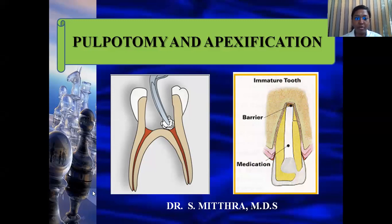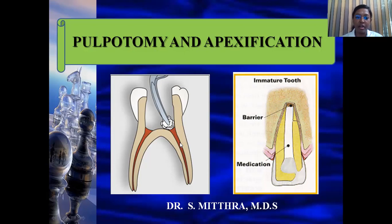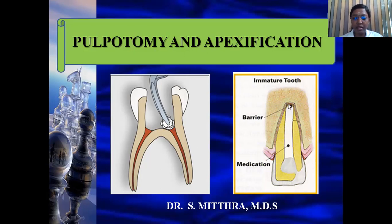Pulpotomy is a procedure in which only the inflamed, infected coronal pulp is completely excised, while we preserve the healthy pulp inside the radicular dentin in order to maintain the vitality of the affected tooth. Apexification is a procedure done in a tooth with an open apex — an immature young permanent tooth with a wide open apex and a blunderbuss canal — where we artificially create a calcific barrier at the apex so that we can complete the obturation procedure.